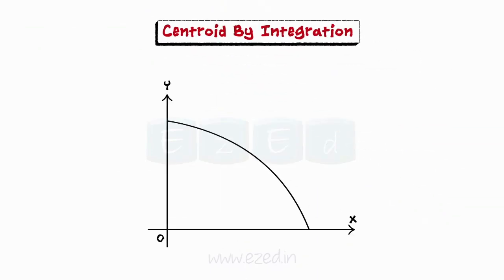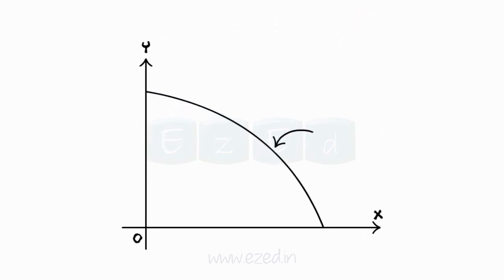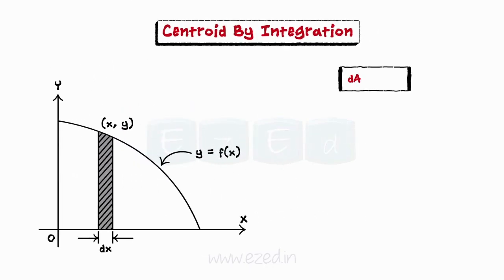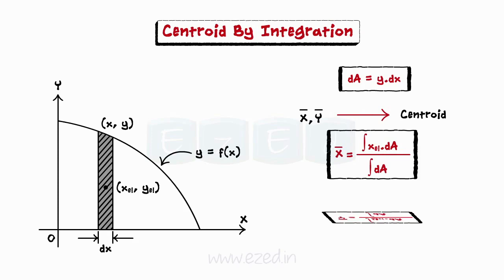For some figures bounded by curves, we use the integration approach to find the centroid. A plane area bounded by a curve defined by the equation y = f(x) is shown. To find the centroid, we take a vertical elemental rectangular strip of very small width dx. Let (x, y) be a point on the curve just over the elemental strip. The height of the strip is y, and the area of the elemental strip dA equals y·dx. Let the coordinates of the centroid of the element be x_el and y_el. If x-bar and y-bar are the coordinates of the centroid of the entire plane area, then we can use the following relations to find them using integration.